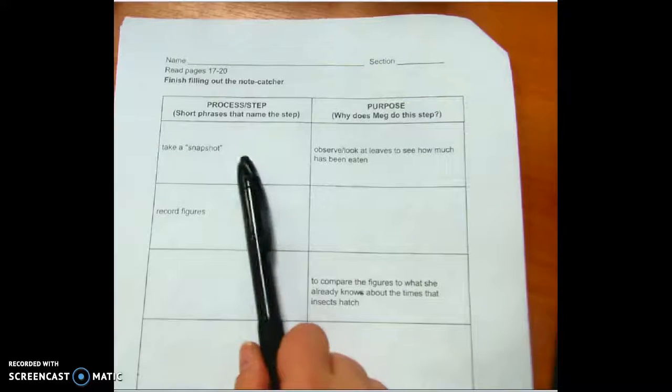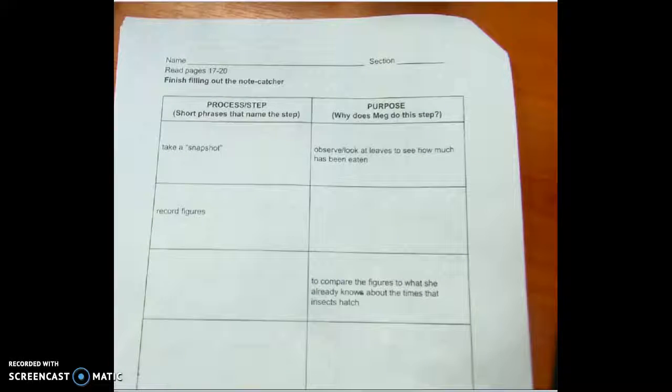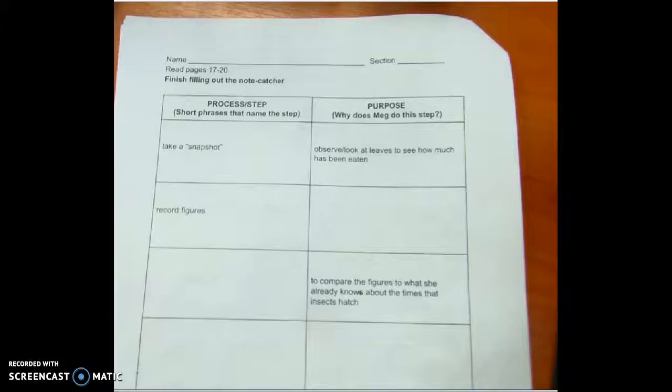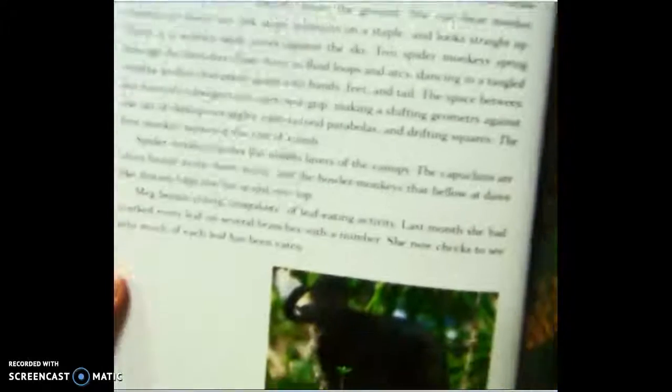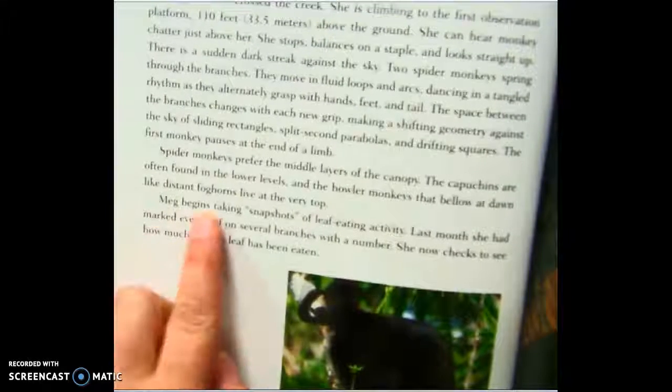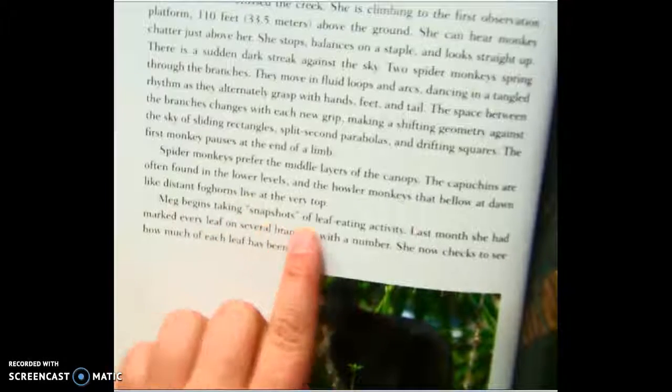You'll notice that it starts out with take a snapshot. If I go into the book, down at the bottom, Meg begins taking snapshots of leaf eating activity.